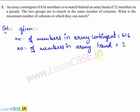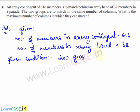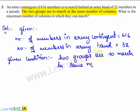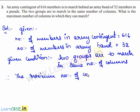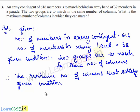The number of members in the army contingent is equal to 616, and the number of members in the army band is equal to 32. The given condition is that the two groups are to march in the same number of columns. Therefore, the maximum number of columns that satisfy the given condition can be obtained by finding the HCF of 616 and 32.